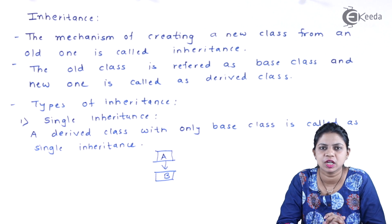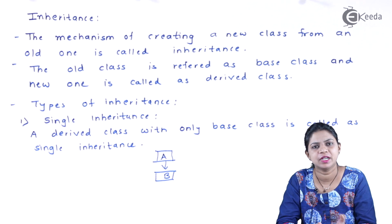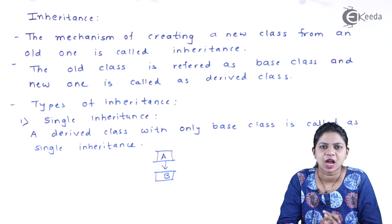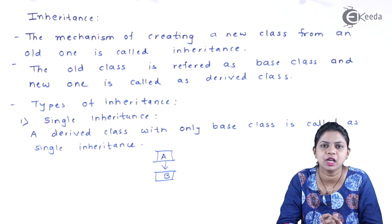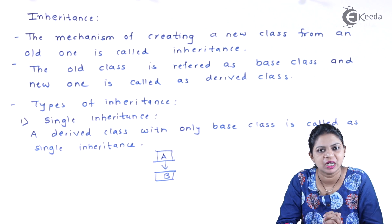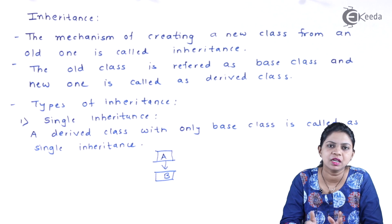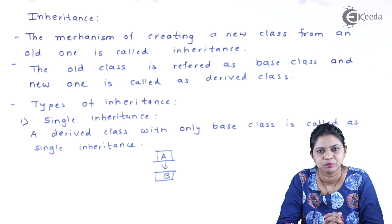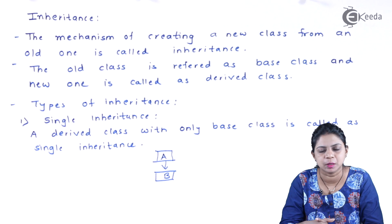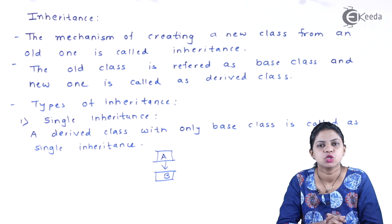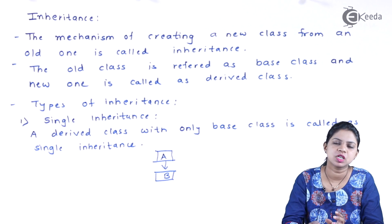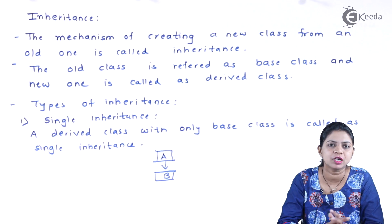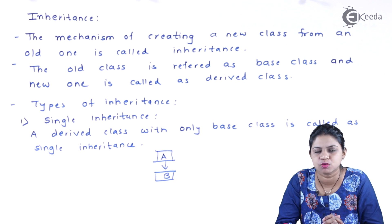The advantage of using inheritance is that when you create a child class from a parent class, your child class can inherit all the features of the parent class and can use all the variables which are there in the parent class. For example, suppose class Increment is incrementing the value of a variable by one. Then I will create one more class, class Decrement, which will decrement the value by one. In that case, I won't declare any new variable in class Decrement — I will use existing variables already present in class Increment. This concept is called inheritance.